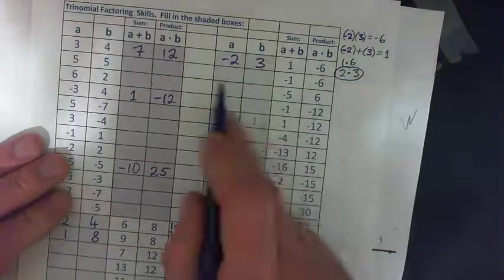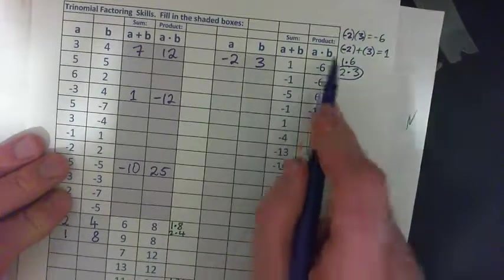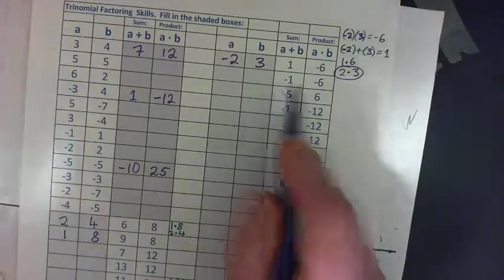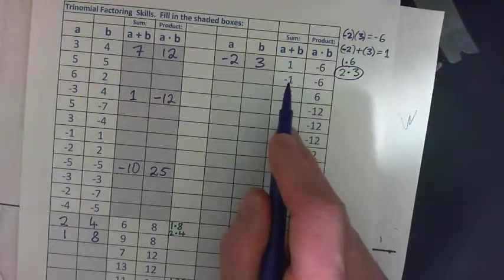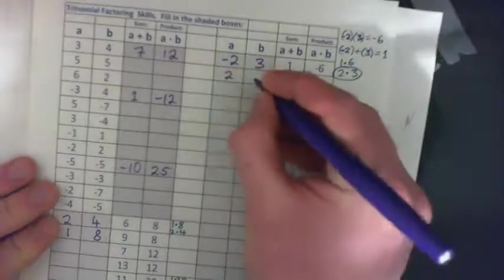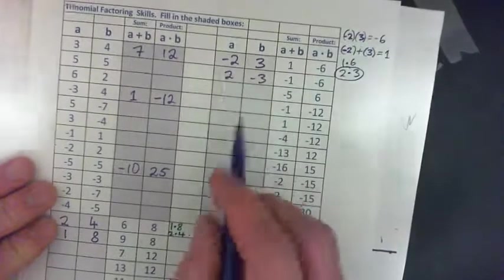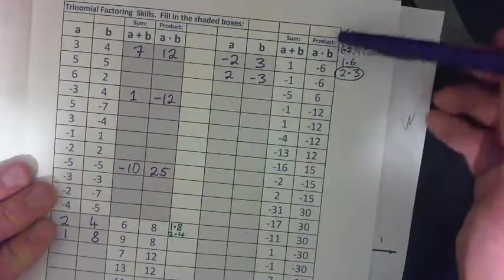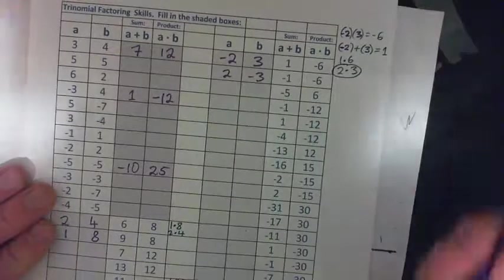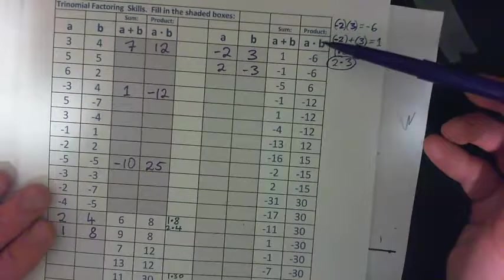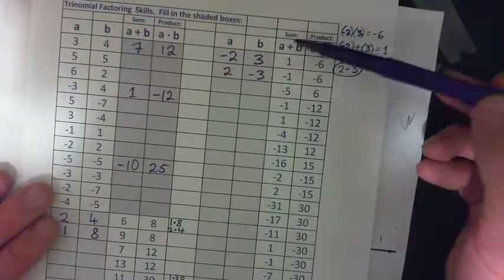The next one: they multiply to negative 6 but they add to negative 1. How about a positive 2 and a negative 3 this time? If you add them, you get negative 1. If you multiply them, you get negative 6. That's what I'm asking you to do — go down through the list and see if you can figure out what two numbers multiply and add to give each result.